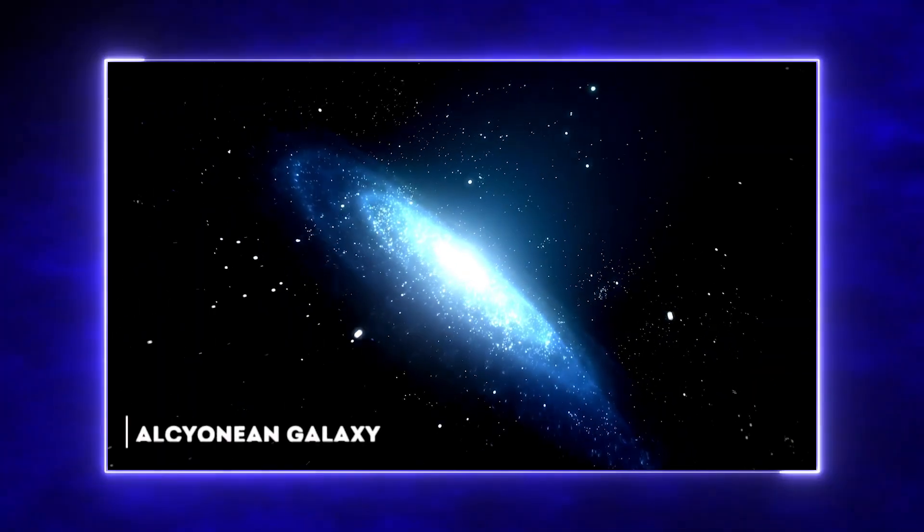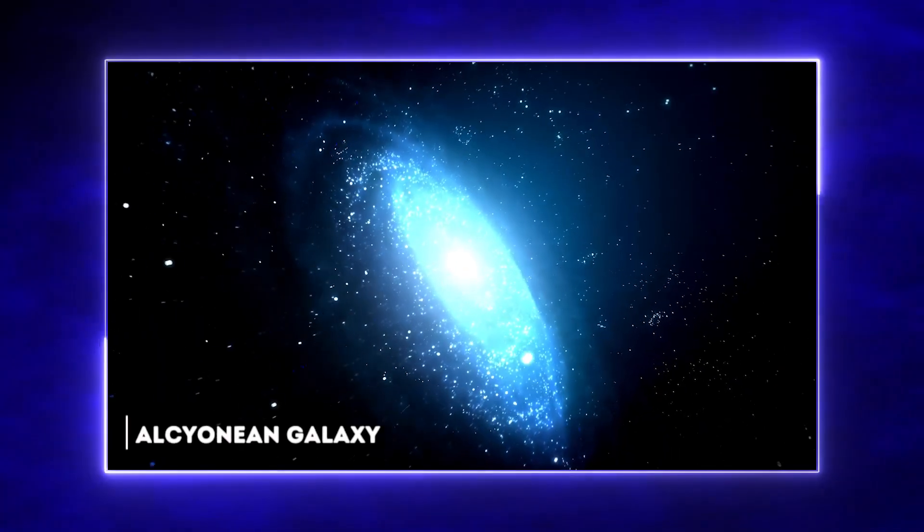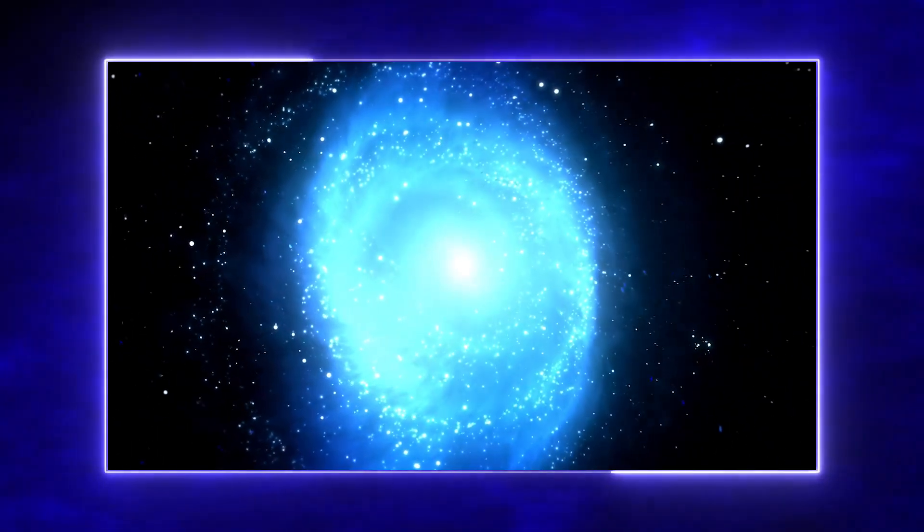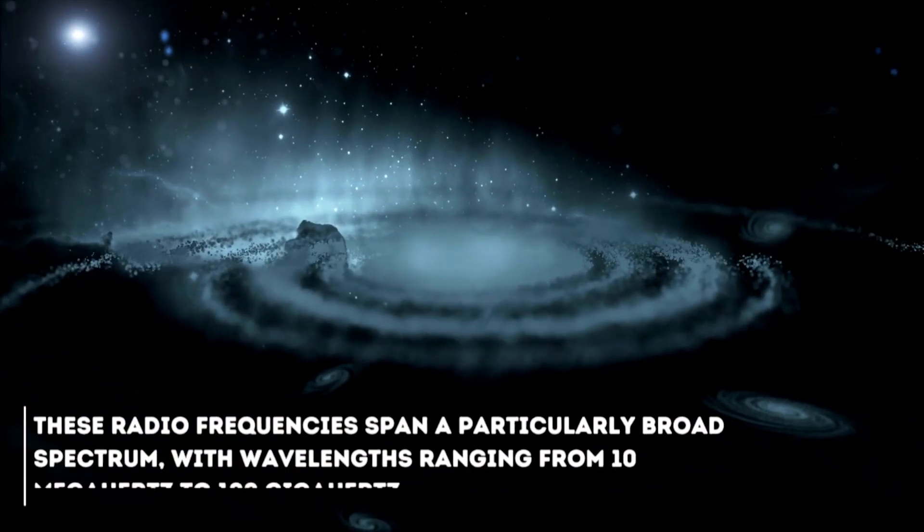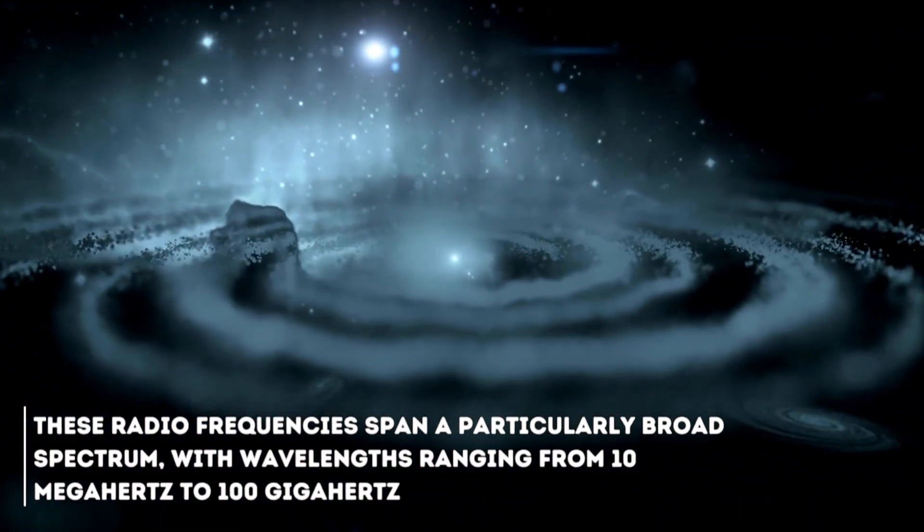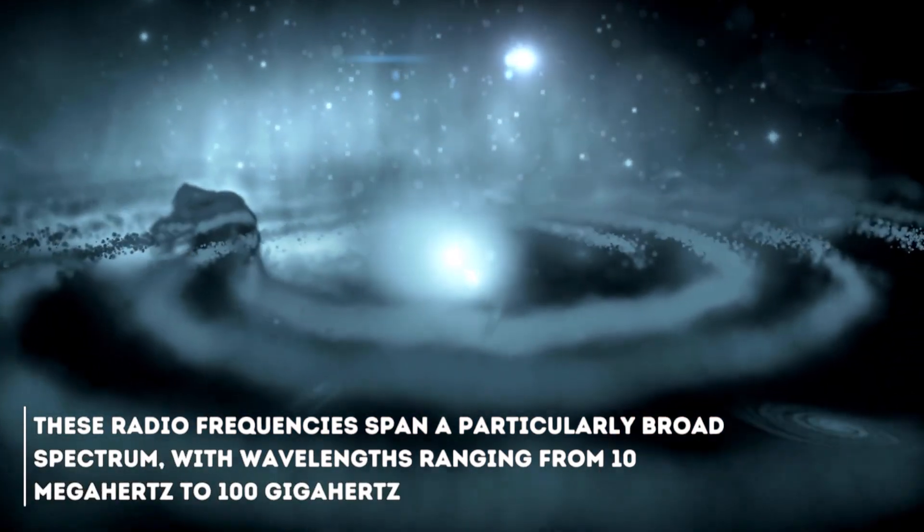Back to the topic and today's main protagonist, let's talk about the strange Alcinean galaxy. This is a radio galaxy, a type of galaxy that is very luminous in radio frequencies. These radio frequencies span a particular broader spectrum, with wavelengths ranging from 10 megahertz to 100 gigahertz.